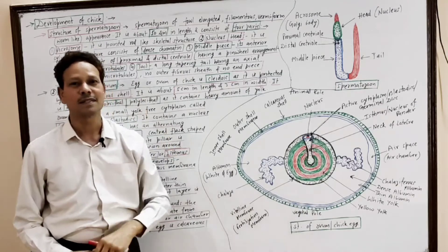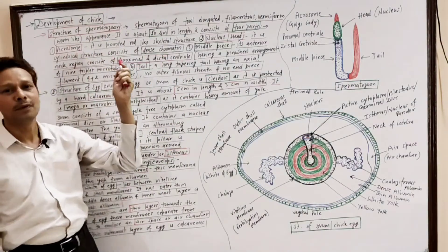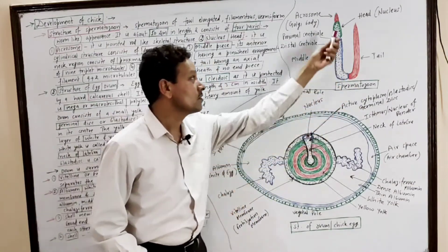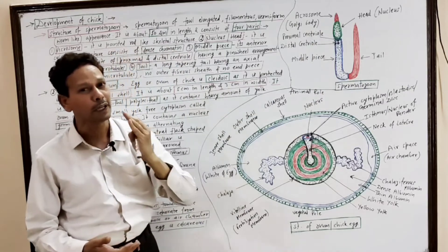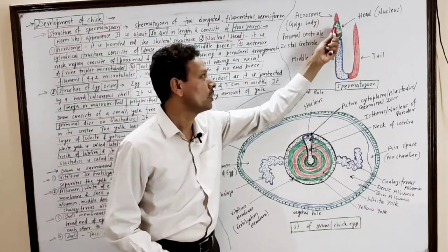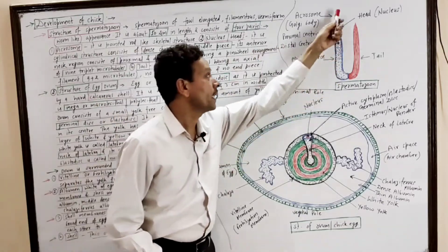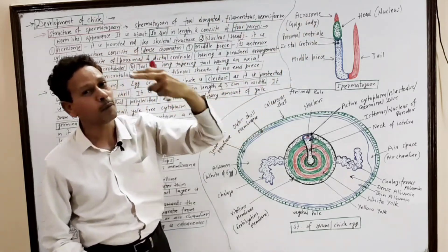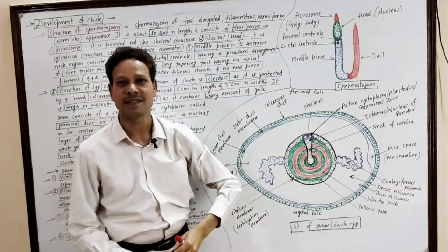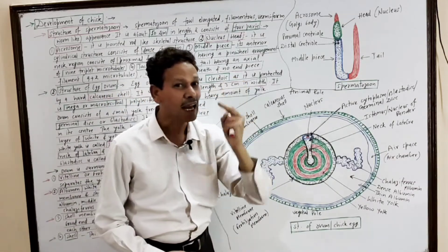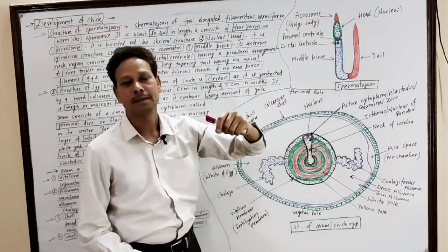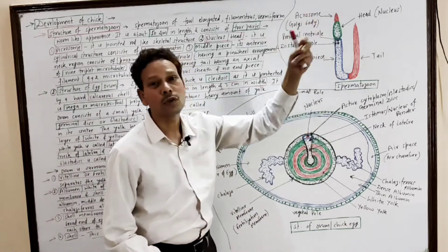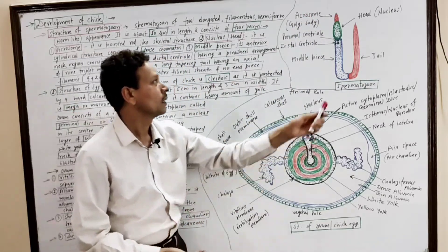First of all, we will discuss the structure of spermatozoa. In this diagram it is very clear: the structure of spermatozoa in case of birds or in case of chick. It consists of four parts. The anterior-most part is the acrosome, which is made up of the Golgi body. This part acts as a skeletal structure and it is involved in the penetration of the spermatozoa into an ovum.